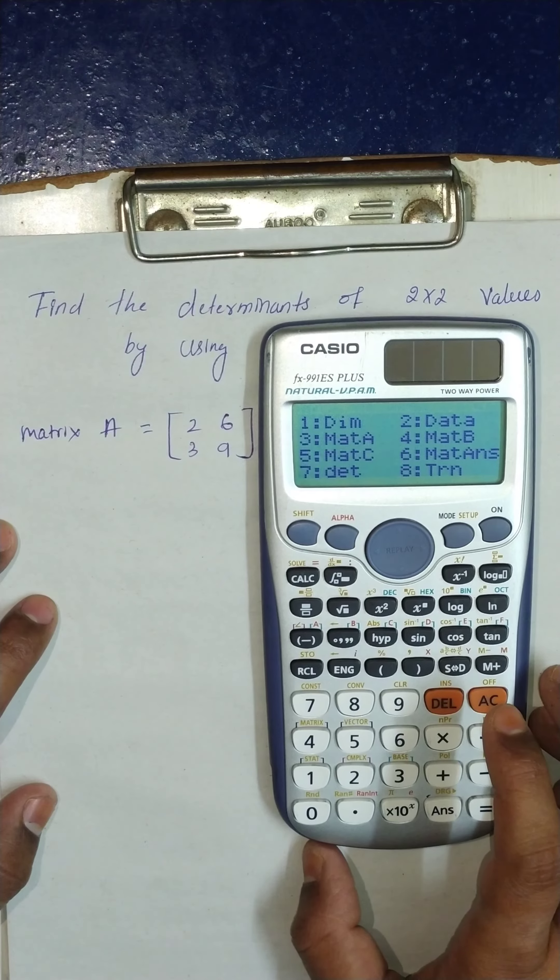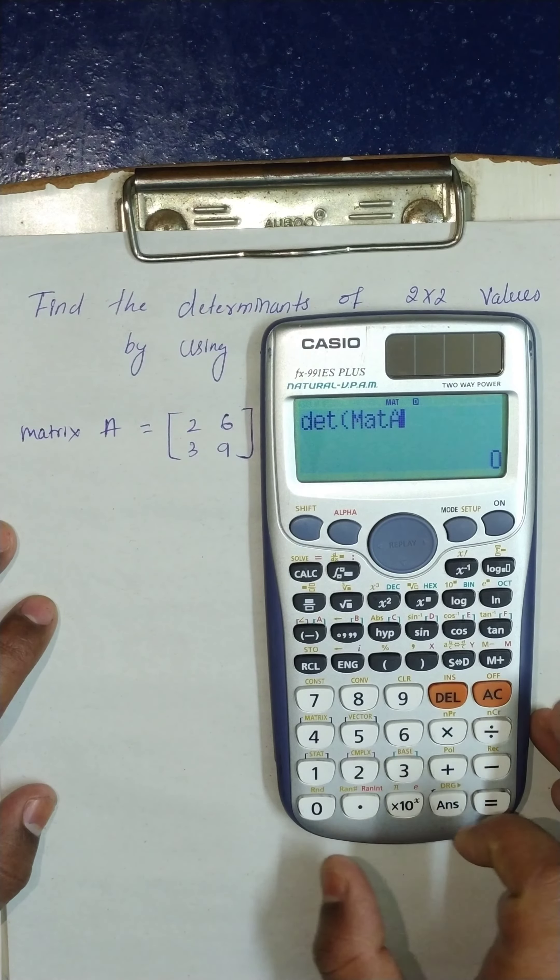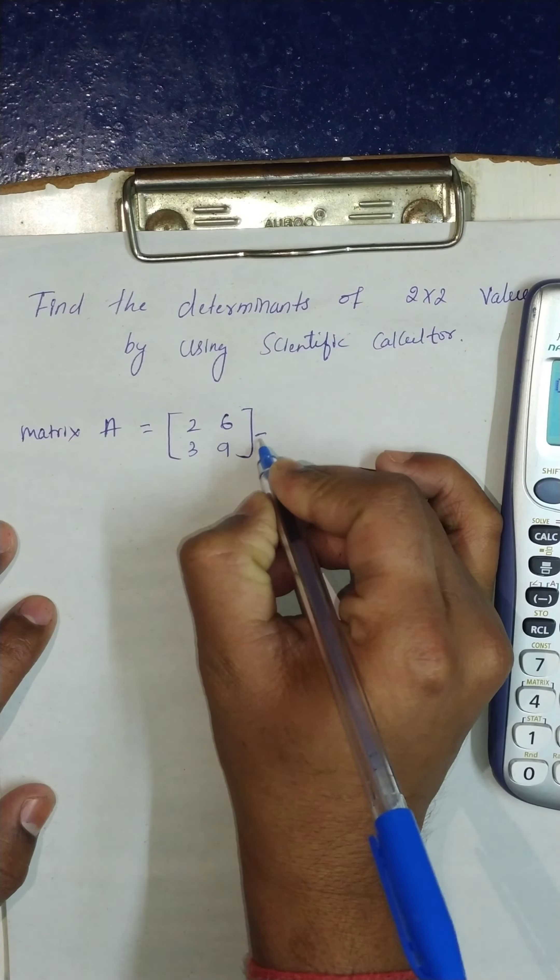You stored the matrix value in position 3. Press 3 and you will get the determinant: matrix 2, 6, 3, 9 equals 0.